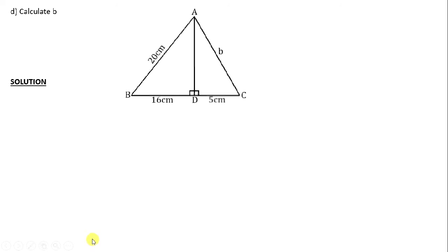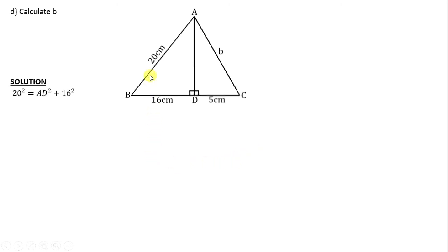The next question says calculate b. When you look at this diagram, triangle ABC has two right-angled triangles: triangle ADB and triangle ADC. When given two triangles, find the one that has at least two lengths given, then use those two lengths to find the third one using the Pythagoras theorem. Looking at triangle ADB, the hypotenuse is 20 centimeters and the adjacent sides are AD and 16. So we state: 20 squared is equals to AD squared plus 16 squared.